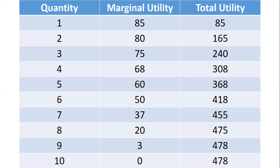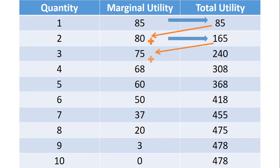The third bite, the additional satisfaction I gained is 75. The total utility is the total amount of satisfaction obtained from the consumption of a good or service. As you can see, it's 85 for the first bite. For the second, it's 85 plus 80, so it's 165. For the third bite, it's 165 from the two previous bites plus the additional 75, which is why we get 240.